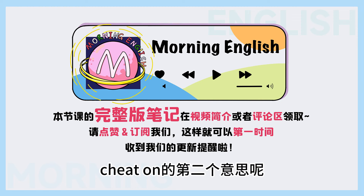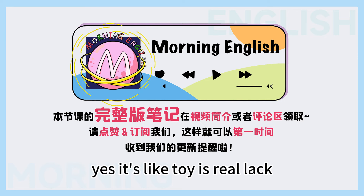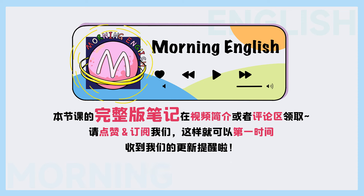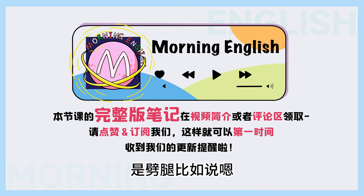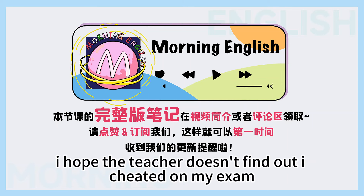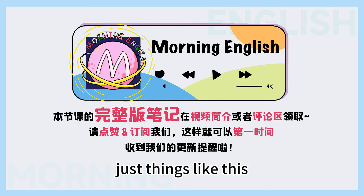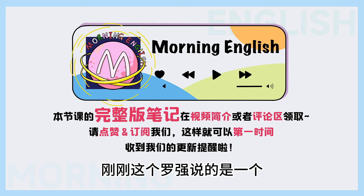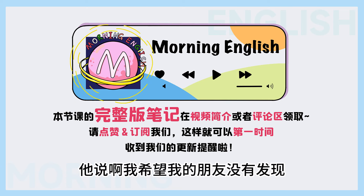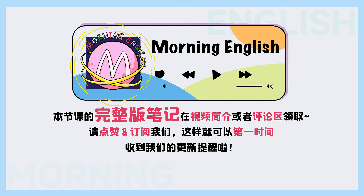Cheat on的第二个意思呢，是叫做劈腿。 Like you stand on two boats. So cheat on的第二个意思呢，是劈腿，比如说，真的很对不起我的女朋友啊，我劈腿了。 So a couple of example sentences: I hope the teacher doesn't find out I cheated on my exam. Or: I hope that my friend doesn't find out her boyfriend cheated on her. Luckily, I only have the experience on exam, never with a girl, so it's okay.